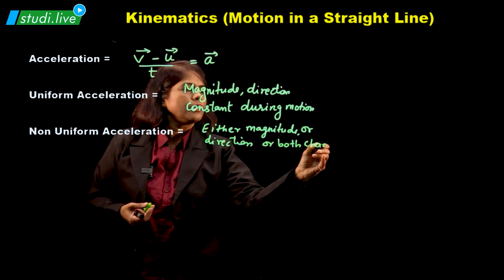Then comes average acceleration. Average acceleration is change in velocity upon change in time. And the next one is instantaneous acceleration. Instantaneous means at a certain instant of time, and it should always be written in terms of limits. So it is: limit as delta t tends to 0 of delta v upon delta t — change in velocity upon change in time.